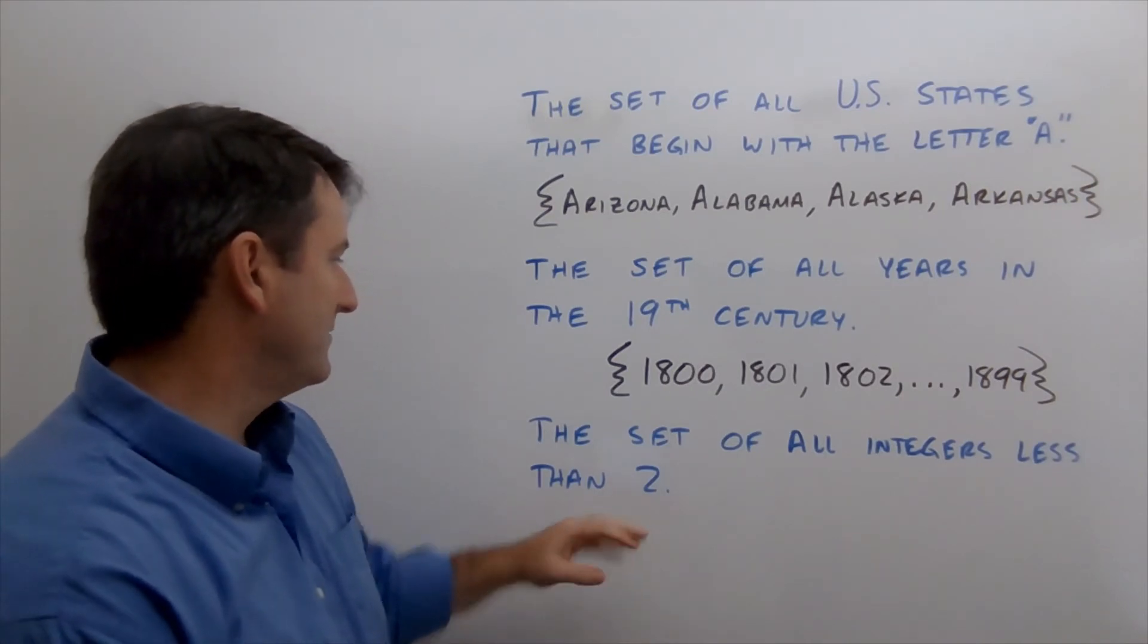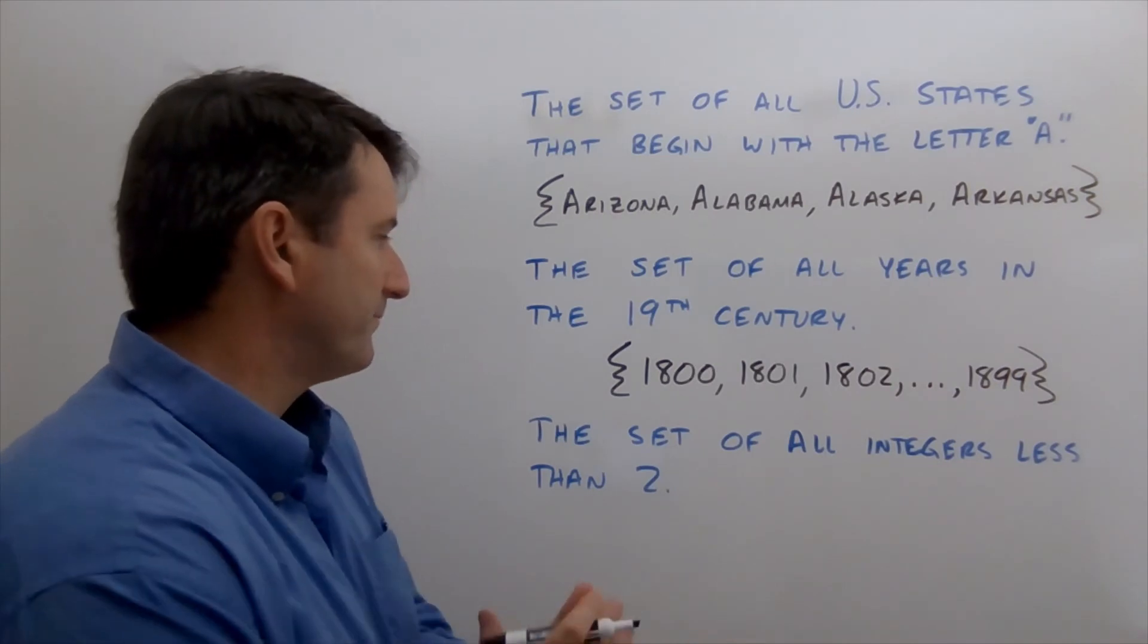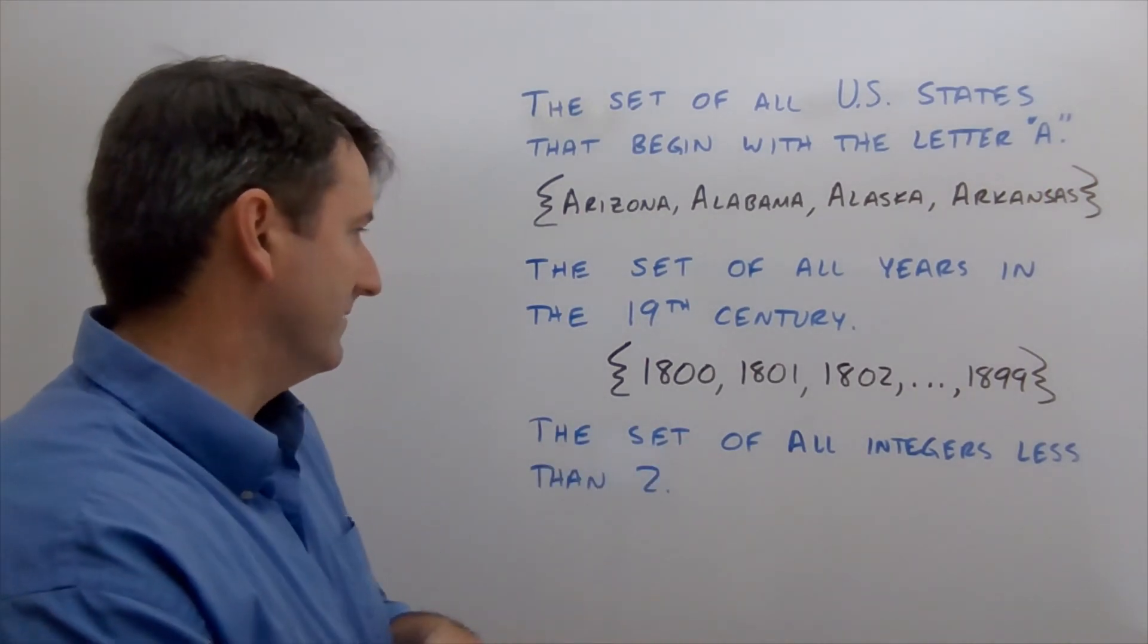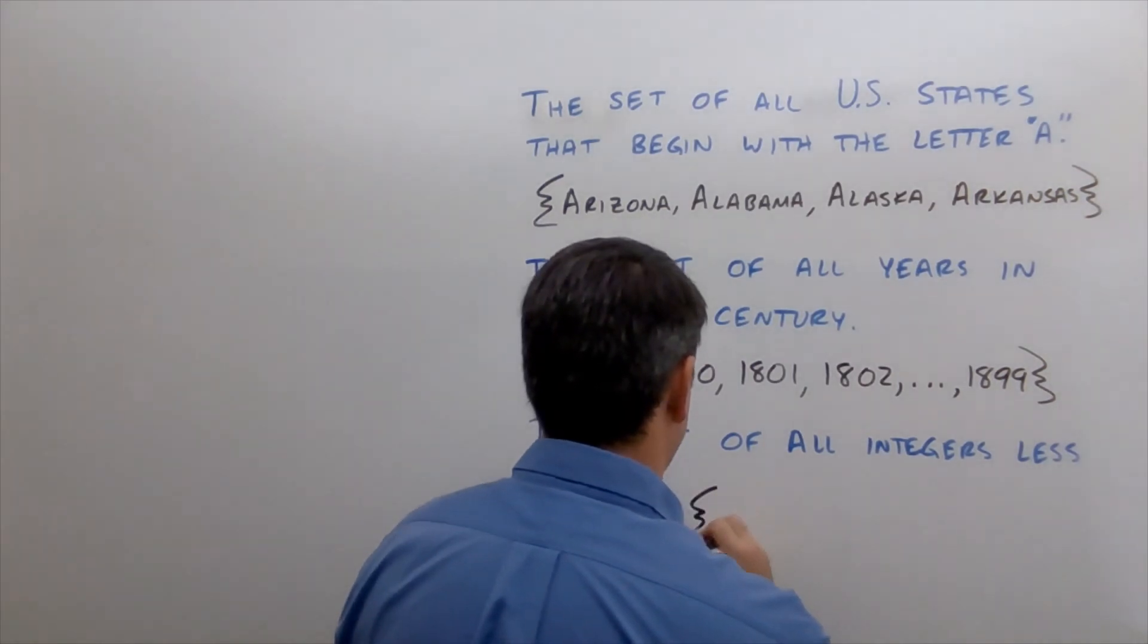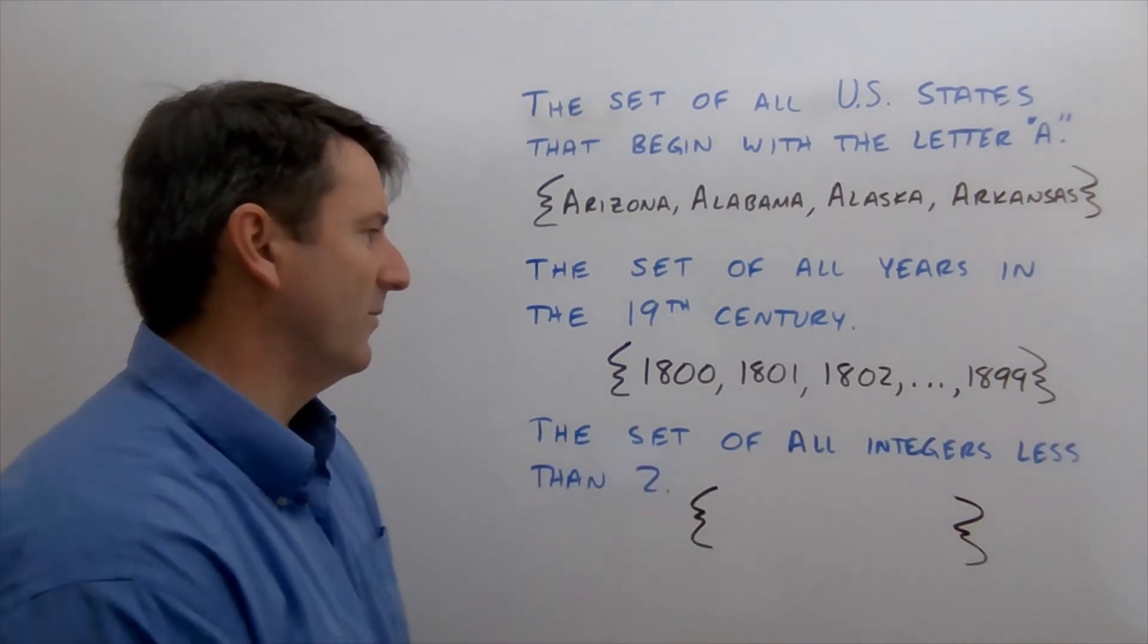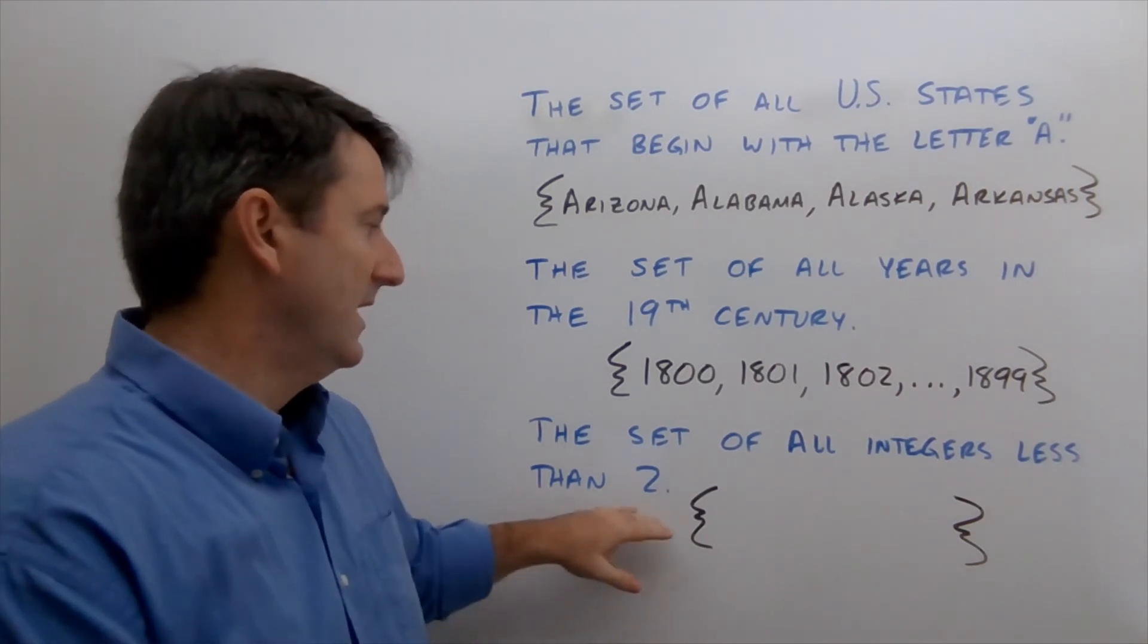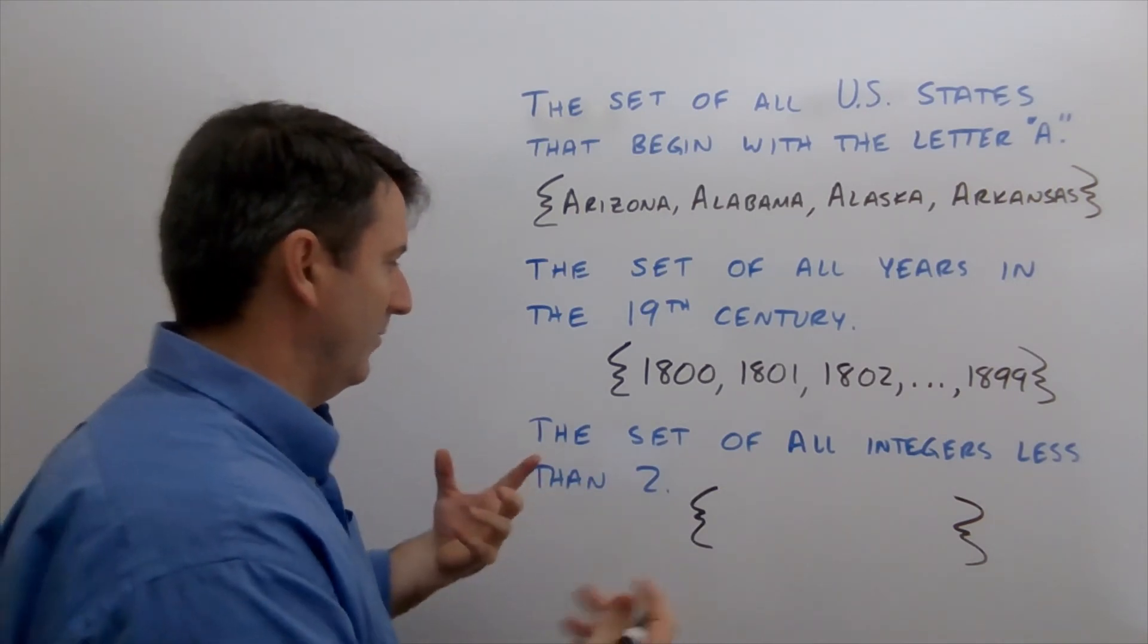Alright. The last one is the set of all integers less than two. So an integer is a whole number and it can be either positive or negative. And so let's put some braces here. And then there's a couple of different ways that we could think about this. The first integer that's less than two, because notice that it doesn't say less than or equal to. So two is not in this set. But the first integer that would be less than two would be one.